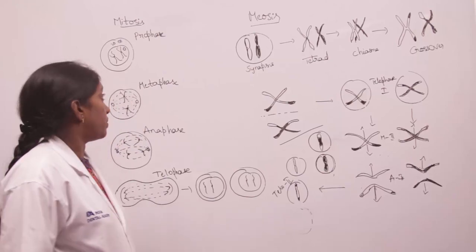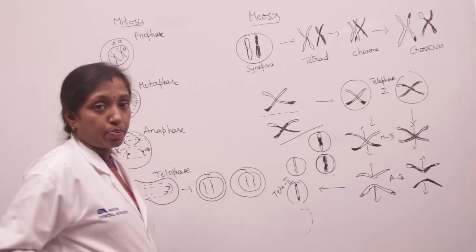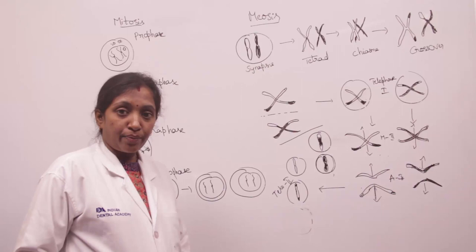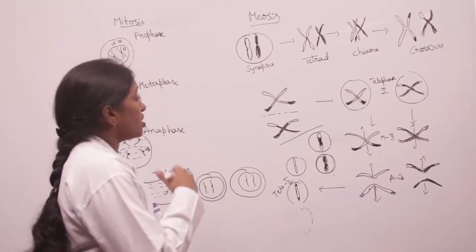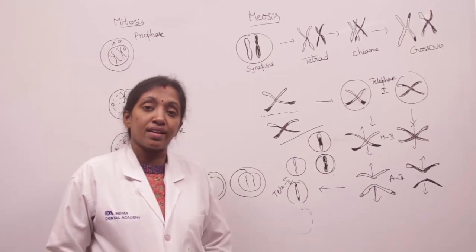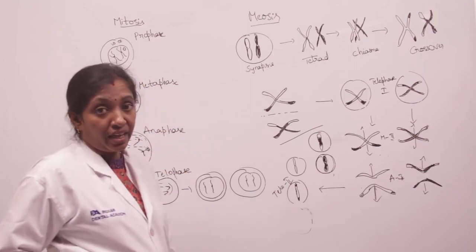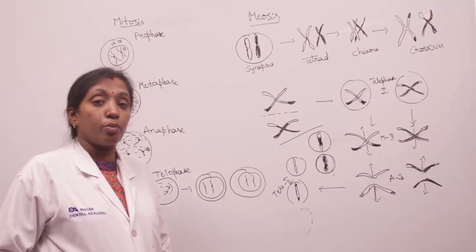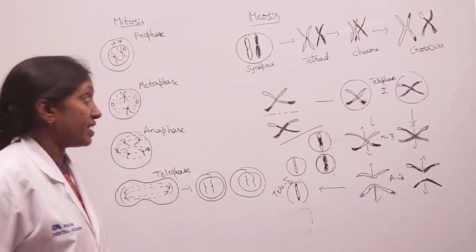Today we are discussing cell divisions, that is mitosis and meiosis. Mitosis is seen in all the somatic cells and it helps in the growth of the organism. Meiosis can be seen only in the sex chromosomes and the primitive sex cells. Meiosis is a reduction division in order to maintain the chromosomal number.